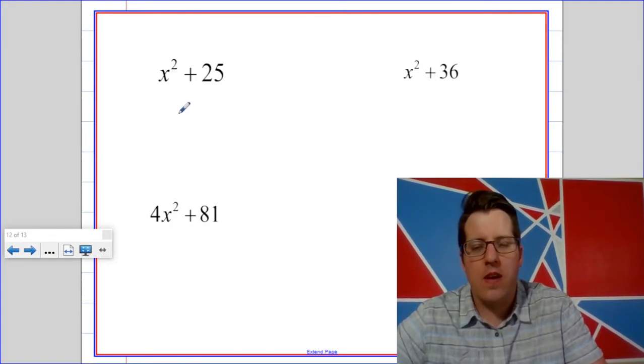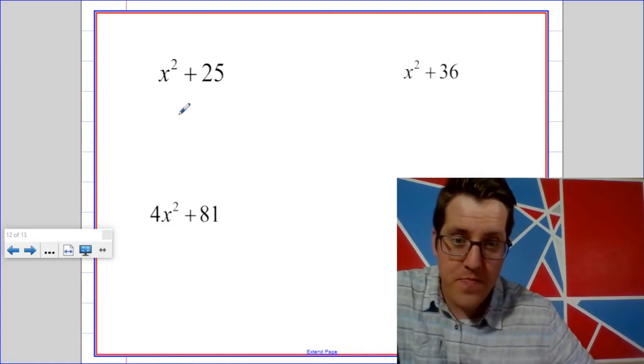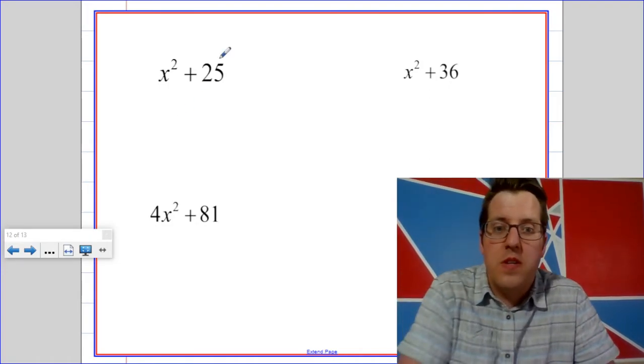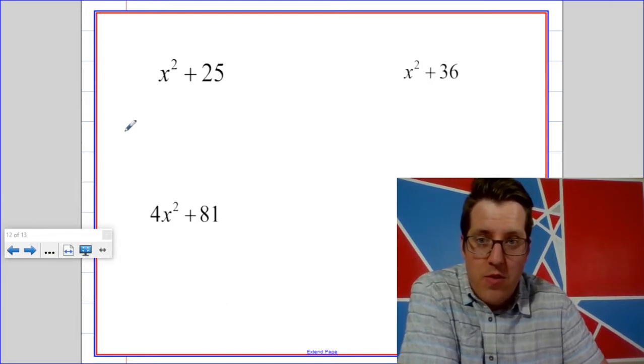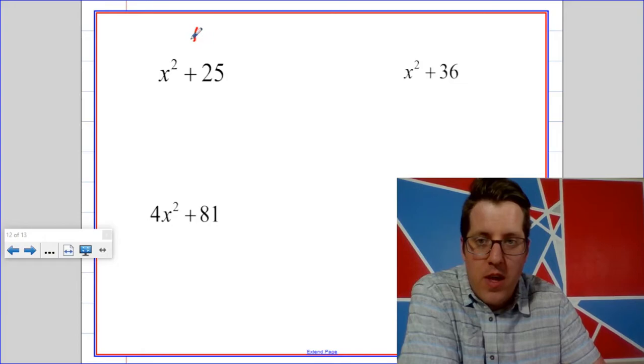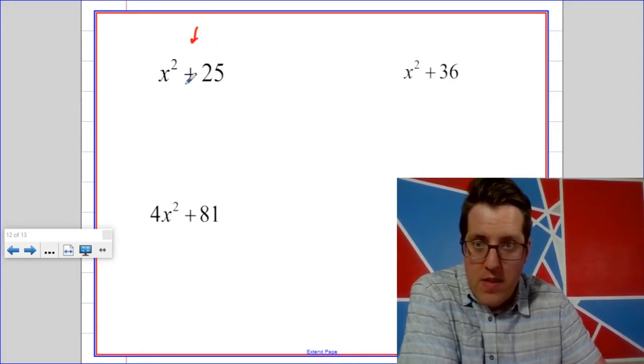I'm gonna explain today how to factor something that wouldn't have real zeros. So there's no real number that I could plug in in order to make this thing zero.